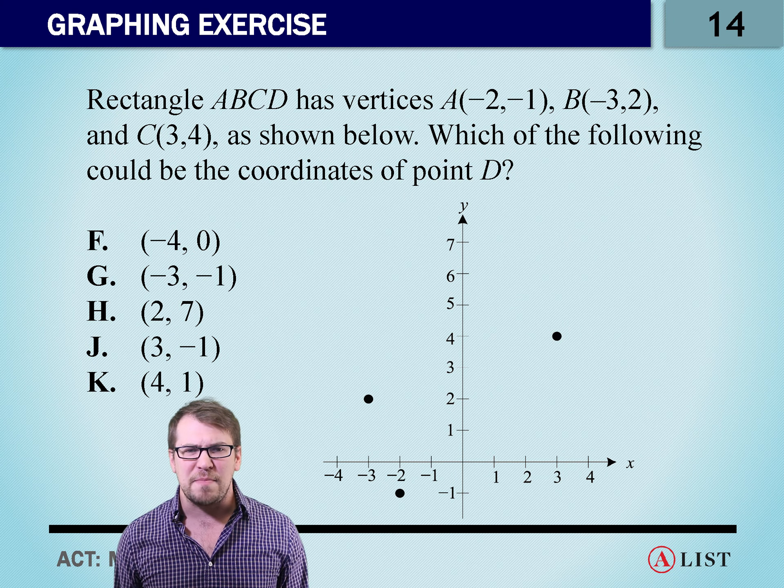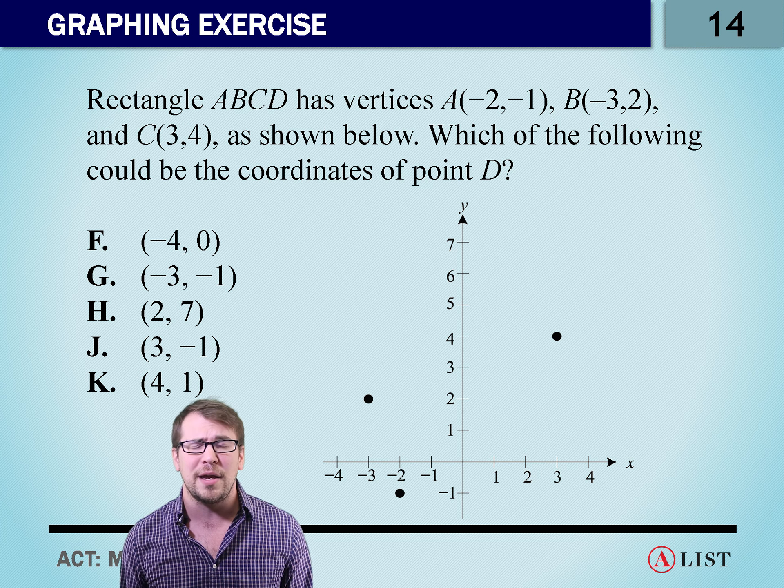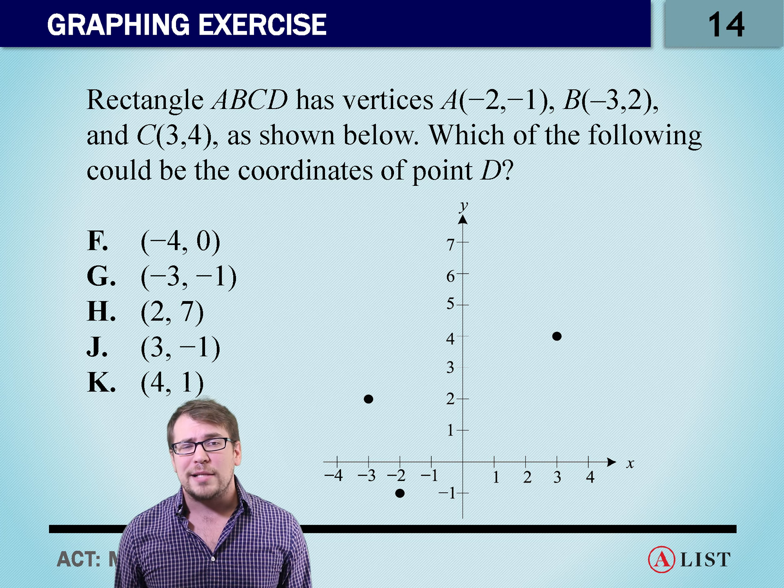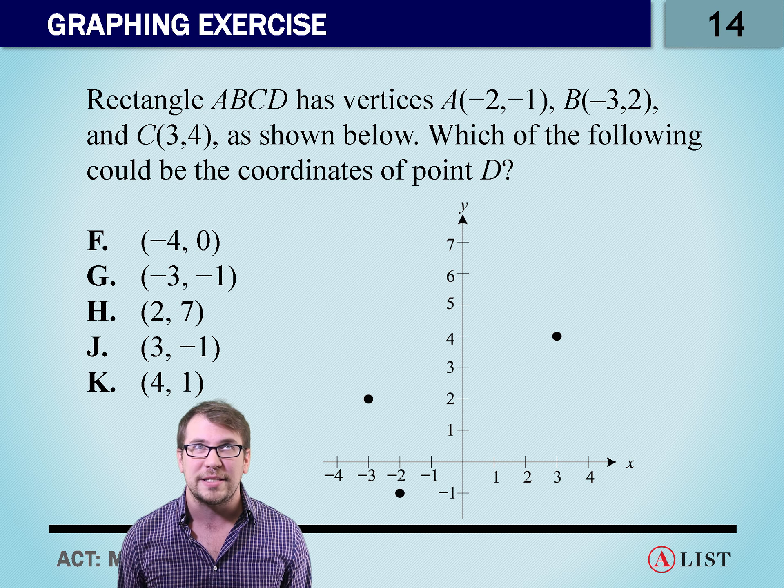Number 14. Rectangle ABCD has vertices A(-2,-1), B(-3,2), and C(3,4) as shown below. Which of the following could be the coordinates of point D?